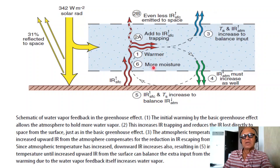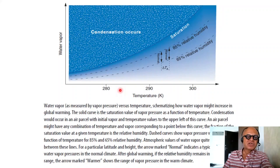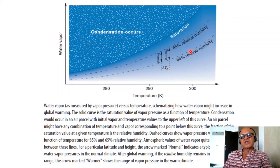Water vapor, measured by vapor pressure versus temperature, shows how water vapor might increase in global warming. In global warming you are going to go from a normal world and increase the atmospheric temperature. On this curve of mean atmospheric relative humidity, let's say of 65%, the range is going to be in the 65 to 85% range, but now you have moved to a warmer temperature so you have relative humidity going again from 65 to 85%, which is the same range at a higher temperature.